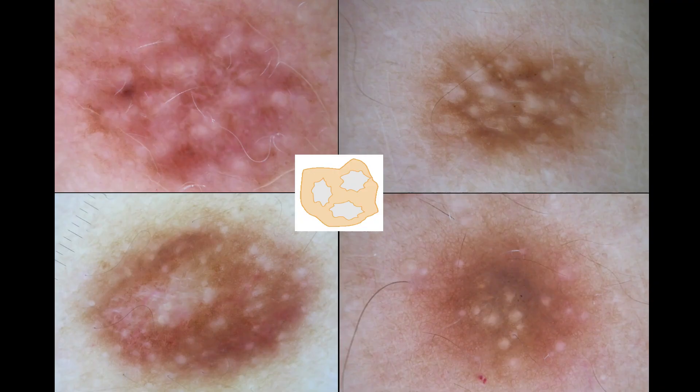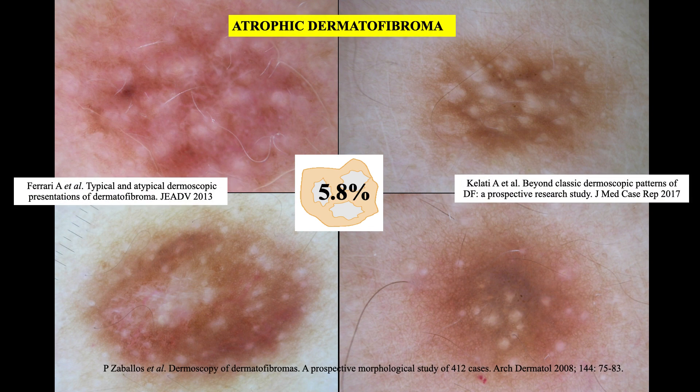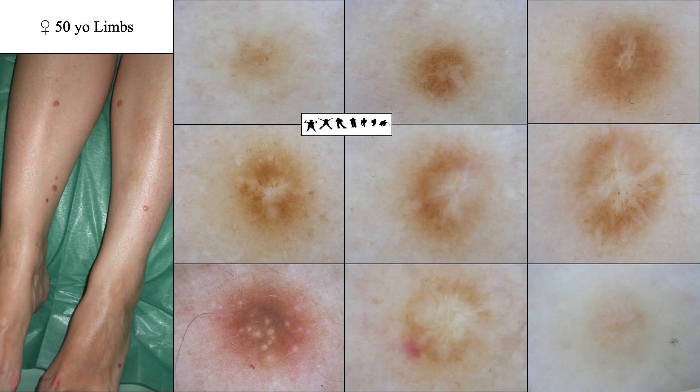A variant of dermatofibromas with an extensive scar-like patch is the presence of multiple scar-like patches. According to Keleti et al., this pattern is more commonly associated with atrophic dermatofibromas. Sometimes, as we can see in this case, a patient with multiple dermatofibromas can show all the patterns seen so far.